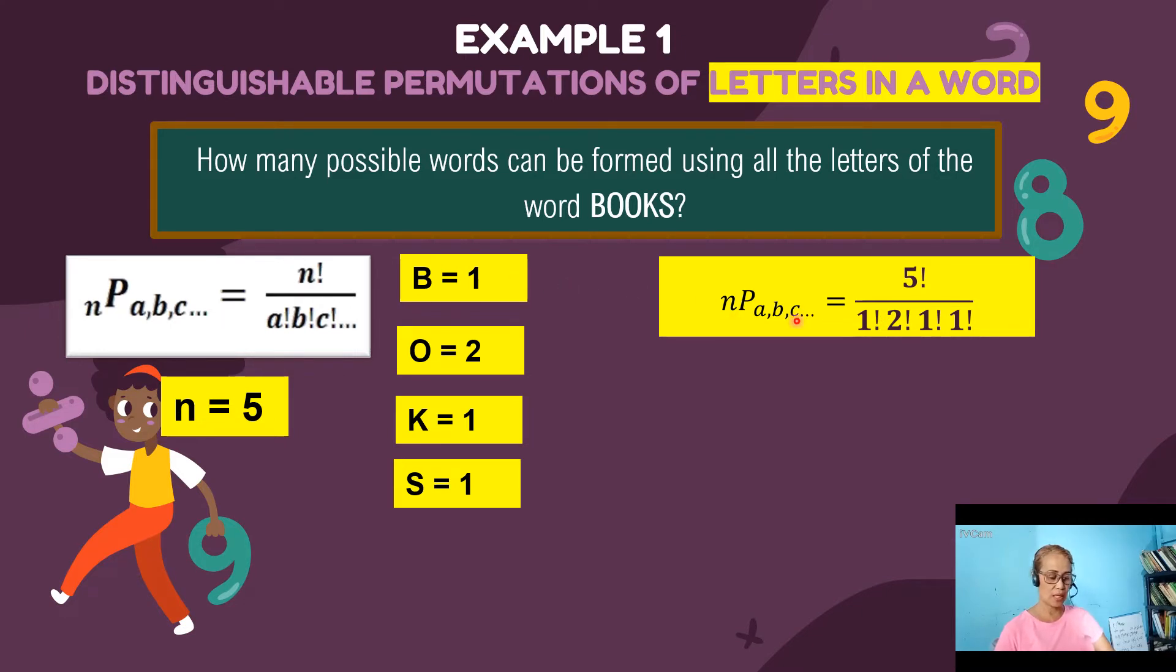Then two factorial are the number of letters that O appears. One factorial came from K. It appeared only once. And the last one factorial is S. The number of times that S appeared in our word.